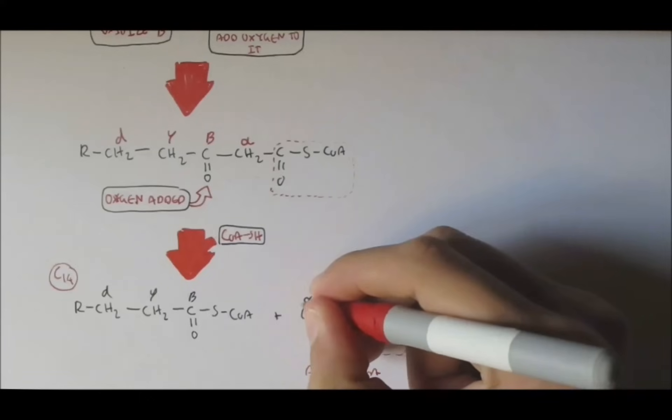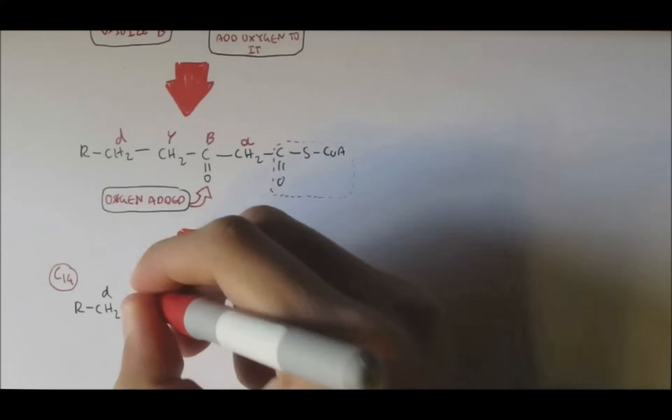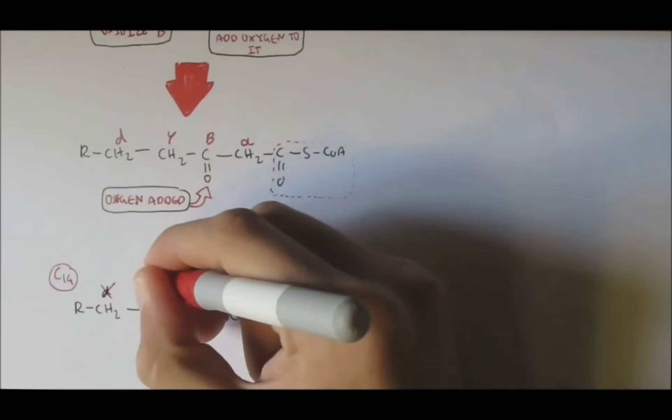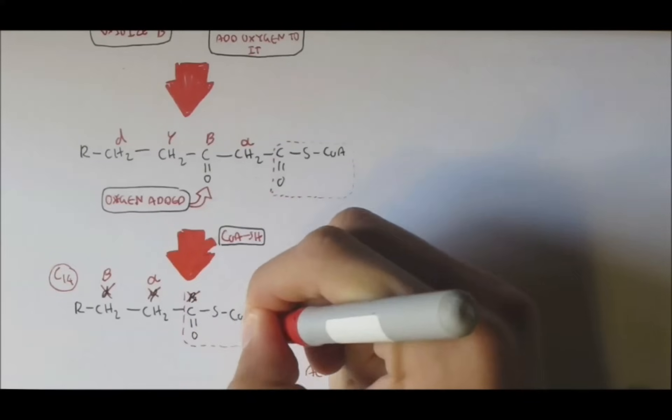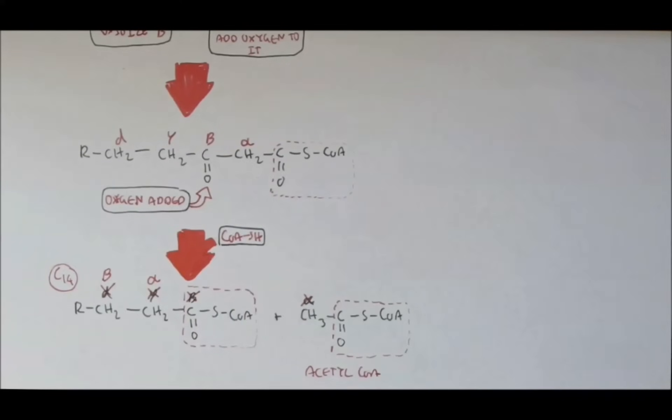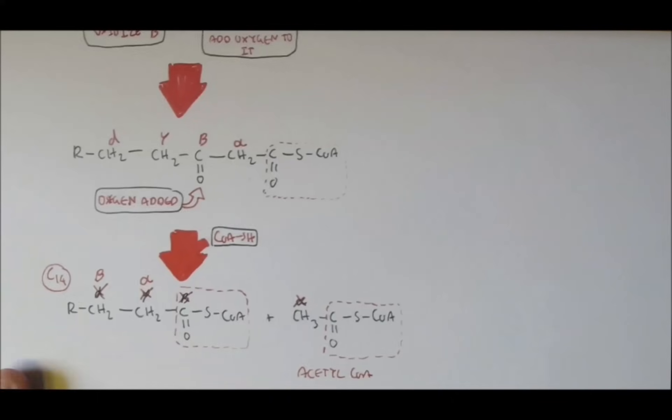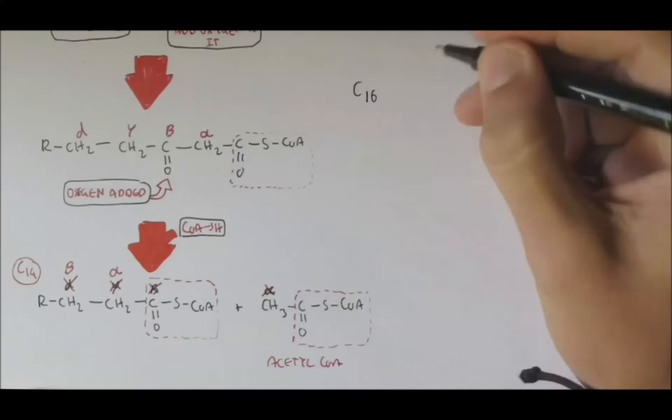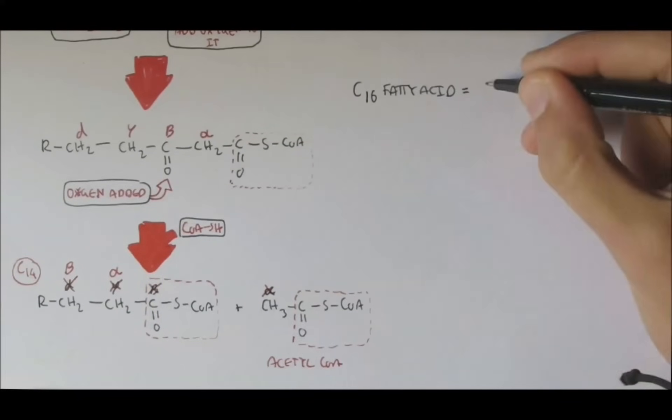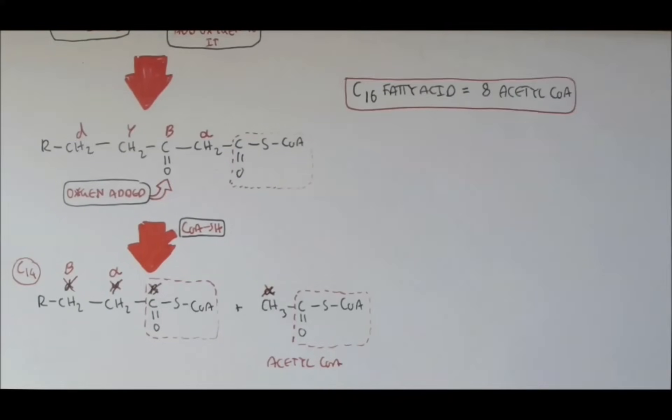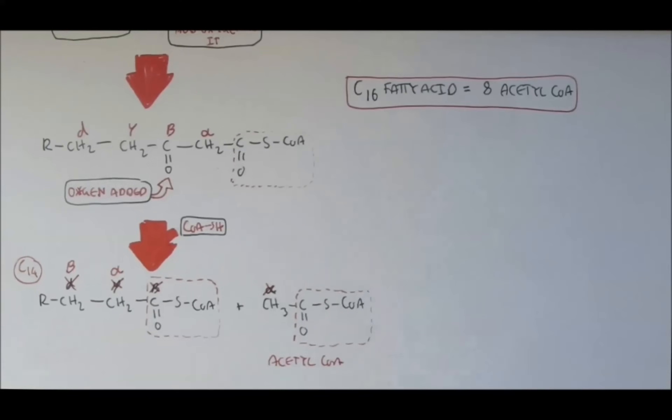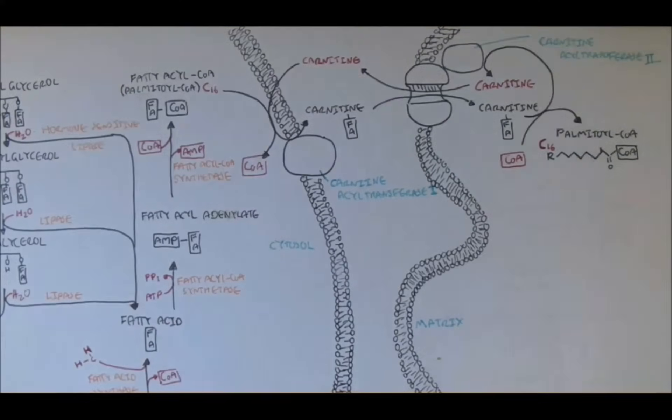Which also means that this is no longer alpha, this is no longer beta, gamma, and delta. Here is the new carboxyl end, which means here is the new alpha-carbon and beta-carbon. And so beta-oxidation can continue on with this 14-carbon. So from 16-carbon fatty acid from the very beginning, if we remove two carbons at a time, we will get eight acetyl-CoAs.